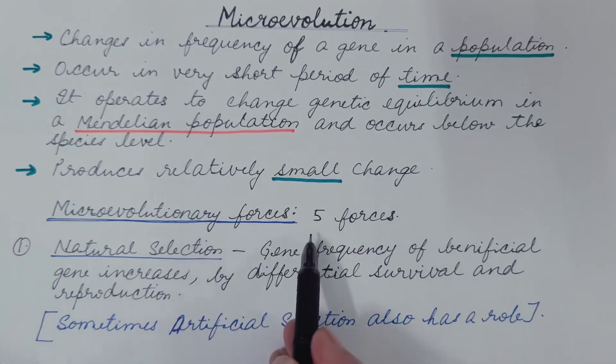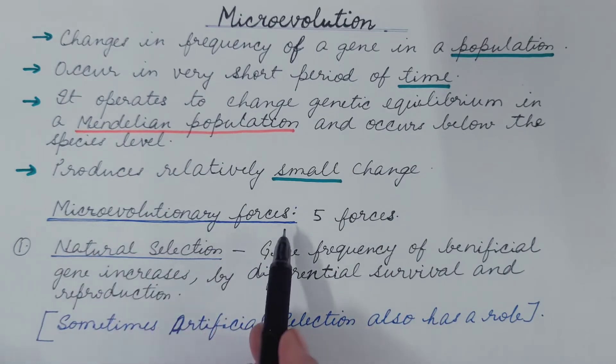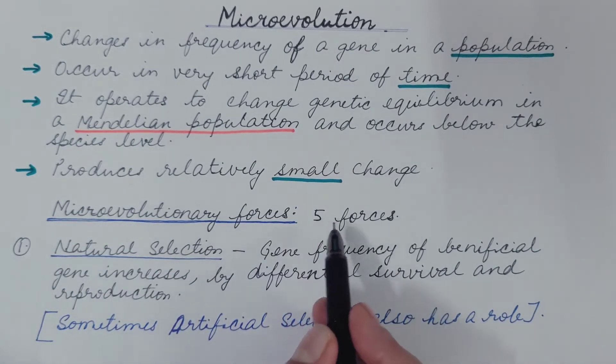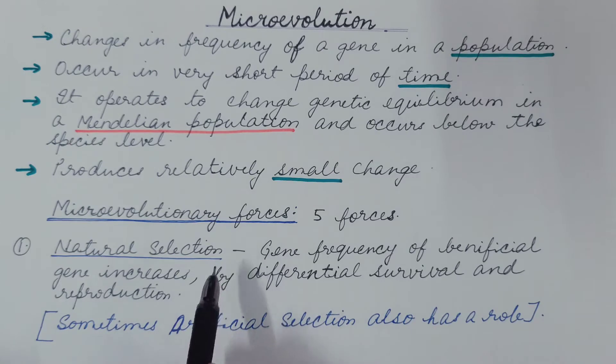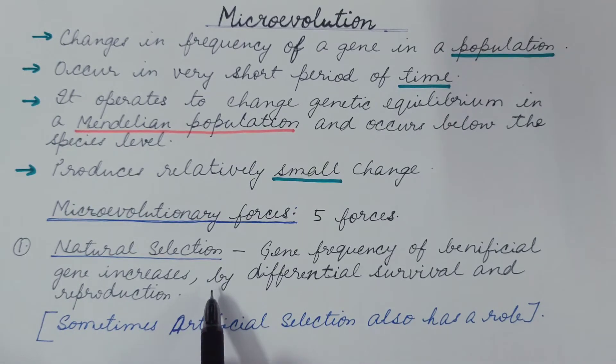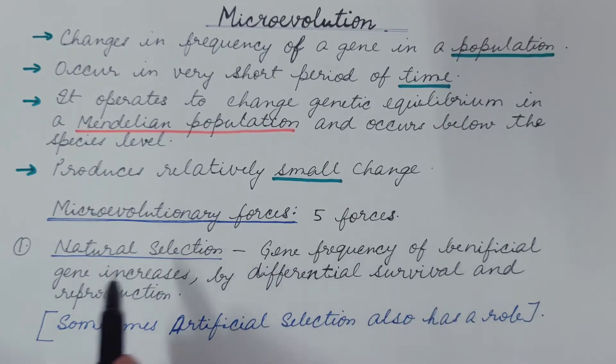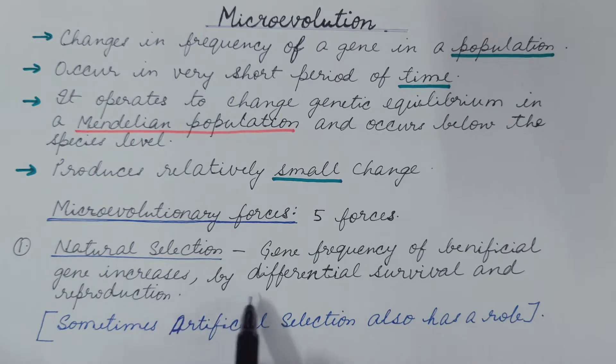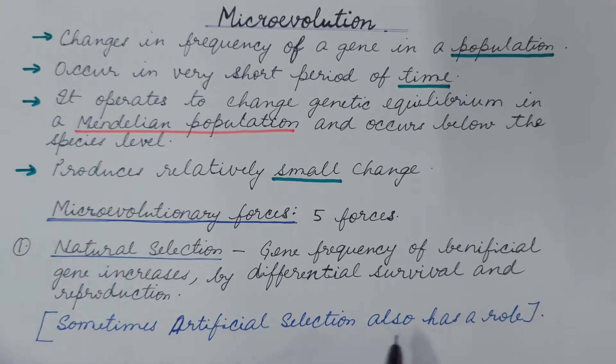There are certain forces which are responsible for the change in gene frequencies. These are known as microevolutionary forces. There are five forces which we are going to discuss. First is natural selection. This we have already discussed in separate topic in detail. You can refer my video. The link is given in the description box. So here gene frequency of beneficial gene increases by differential survival and differential reproduction. Sometimes artificial selection also has a role in microevolution. This artificial selection is not natural but it is performed by human.